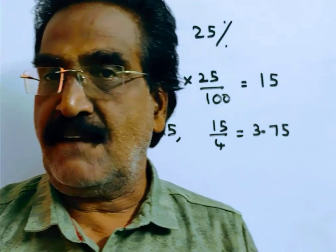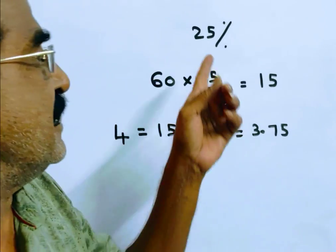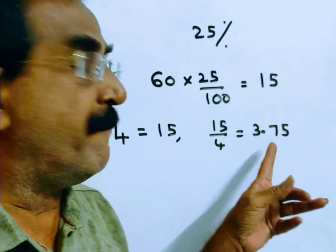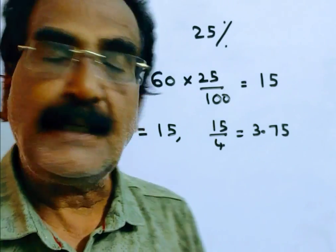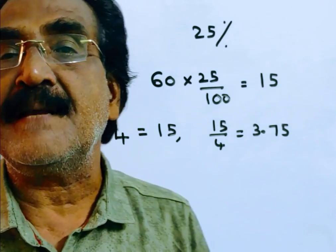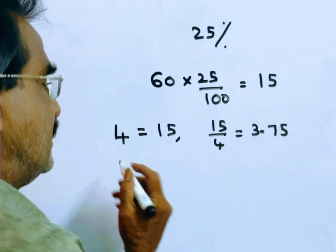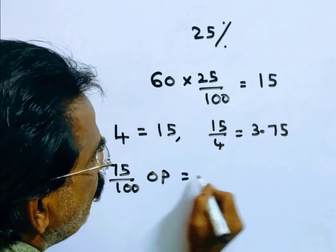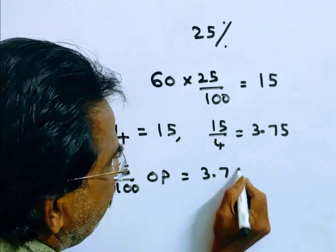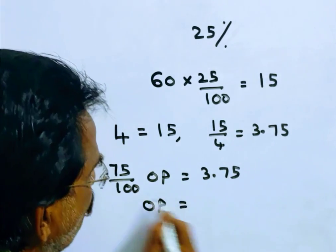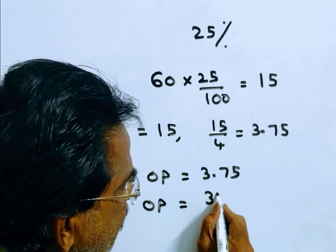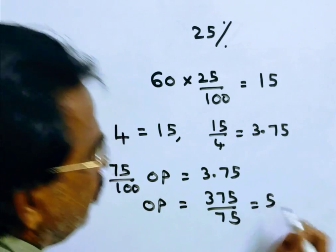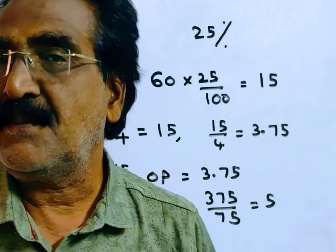Now we want the original price of each mango. What is the reduction here? 25% reduction. After the 25% reduction, the price of each mango is Rs. 3.75. That means Rs. 3.75 is 75% of the original price. So, 75% of the original price is equal to Rs. 3.75. Therefore, the original price is equal to 375 over 75, which gives Rs. 5. The original price of each mango is Rs. 5.